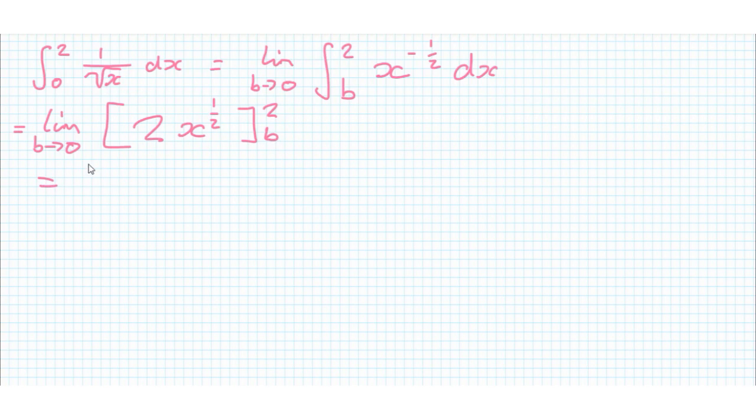So that's equal to the limit as b tends to 0 of, so plugging in 2 we get 2 times 2 to the 3 over 2 and then we get minus 2b to the power of a half. And of course as b tends to 0, well that has no effect on this term here but b to the half tends to 0 because that's the square root of b, so this is just equal to 2 times 2 to the power of 3 over 2.